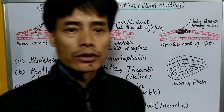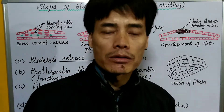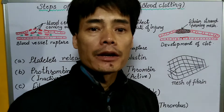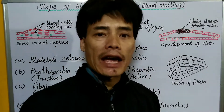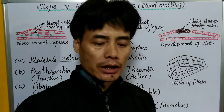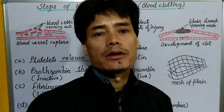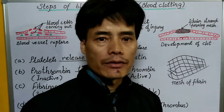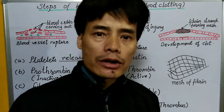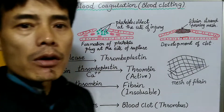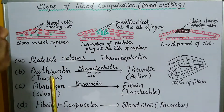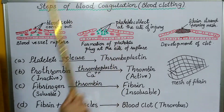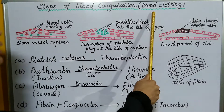My dear students, today we are going to study about the clotting of blood. The clotting of blood is a series of chemical reactions that takes place in order to bring about a clot so that the ruptured part of the body from where the blood oozes comes to a stop. The clotting of blood is called coagulation, or simply referred to as blood clotting.